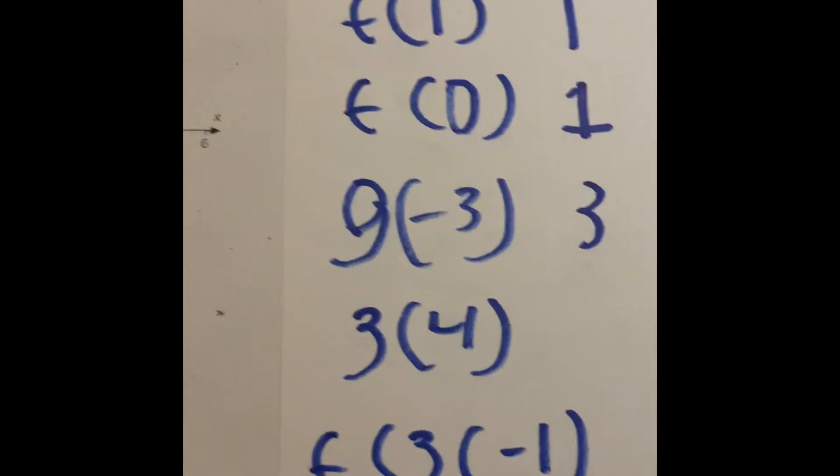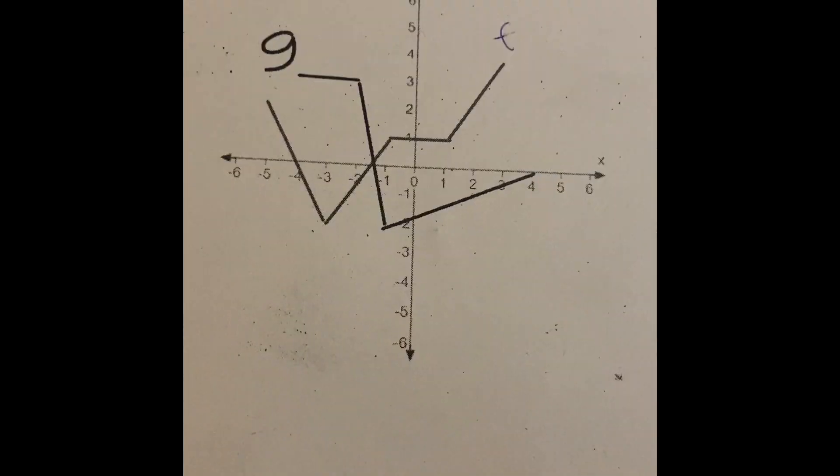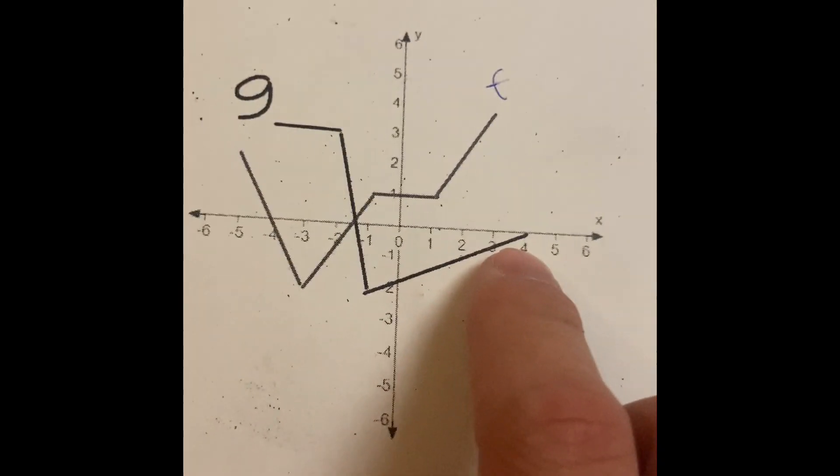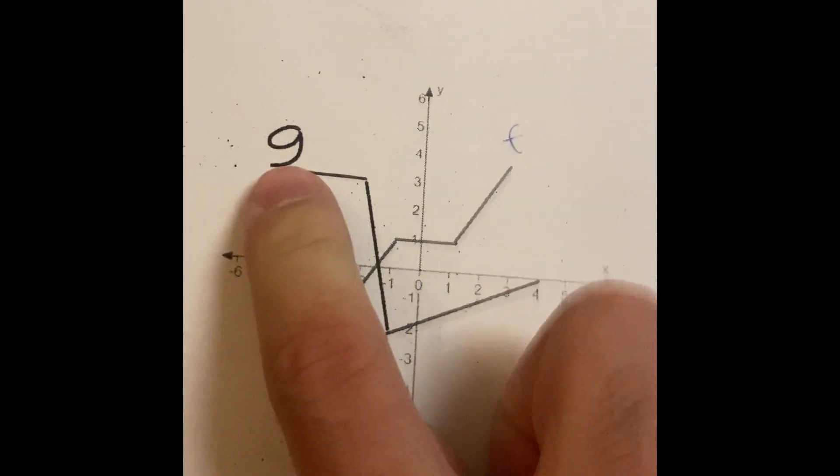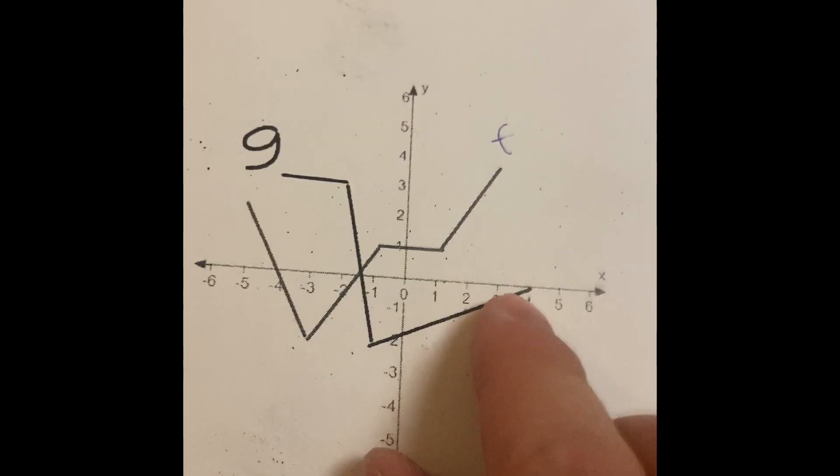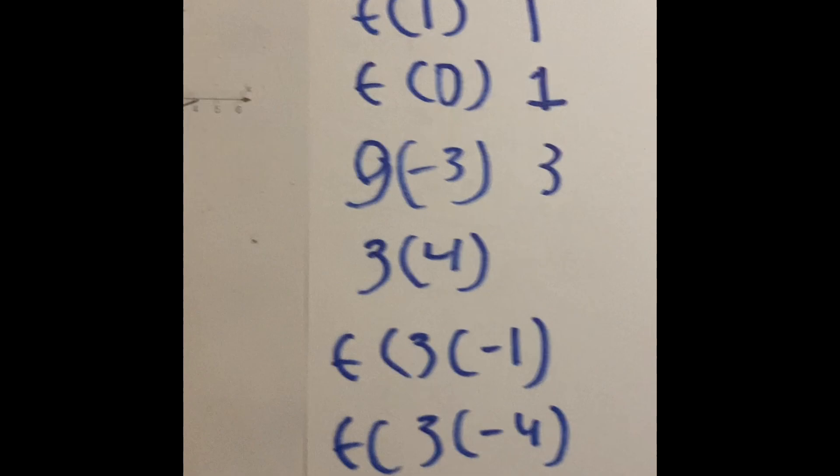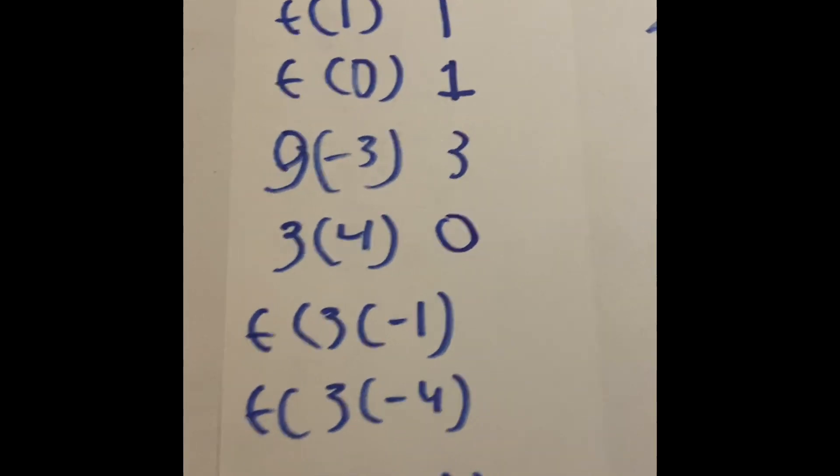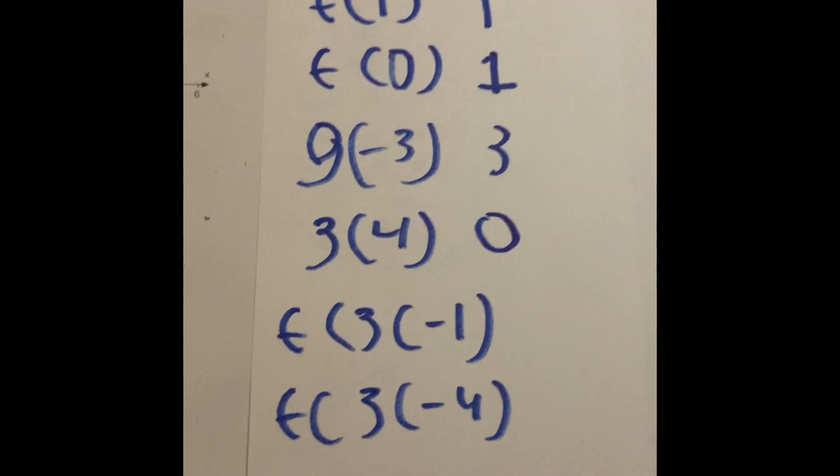Now we have to find the g of four. So we start here and go one, two, three, four. And the g line right over here is going to be four, zero. So we're going to put zero right over here. So the ones where it's just single functions is really, really easy.